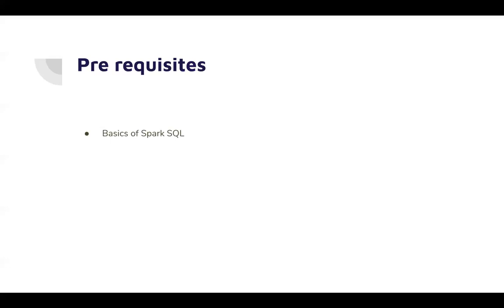The prerequisite for this course is very minimal. You need to know the basics of Spark SQL — how a Spark SQL query runs, the ways to write a SQL query, what a DataFrame is, and how to perform operations like selection or aggregations on a DataFrame. Basics of Spark SQL is mandatory. We will be using the Python API, so if you have an understanding of basics of Python or have worked with PySpark, you are good to go.